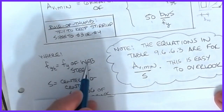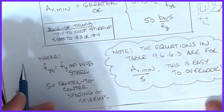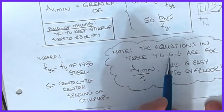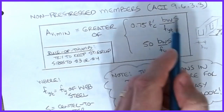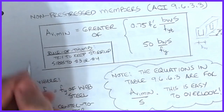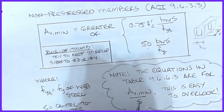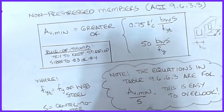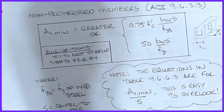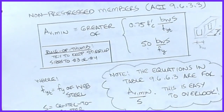The value fyt is the yield stress of the web steel, typically 60 ksi, and S is the center-to-center stirrup spacing. Note that in table 9.6.6.3, these equations are expressed as AV minimum per unit spacing — AV over S — in units of in²/in, so the S term is hidden. This is important: a lot of shear and torsion design is based on an AV/S calculation, so be mindful of that notation.